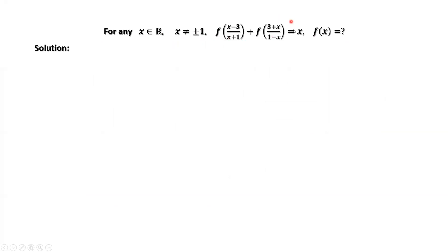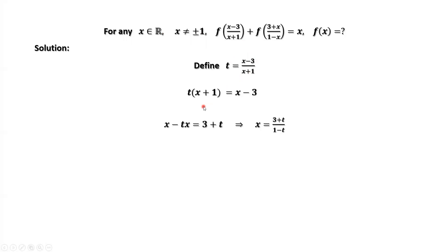This is the given equation. We define the inside part of this as a new variable t. t equals x minus 3 over x plus 1. Solving this equation for x in terms of t, we have x equals 3 plus t over 1 minus t.